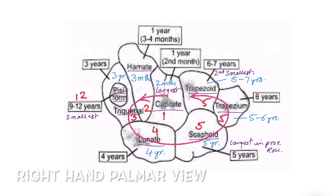In the image, capitate and hamate are both written as 'one year' — this means capitate is the first carpal bone appearing within the first year, and hamate appears at three to four months. Triquetral is at three years, lunate four years, scaphoid five years, trapezium five to six years, trapezoid six to seven years. After learning the mnemonic, hamate can be adjusted to one year; the sequence one-two-three-four was just to set the mnemonic pattern.